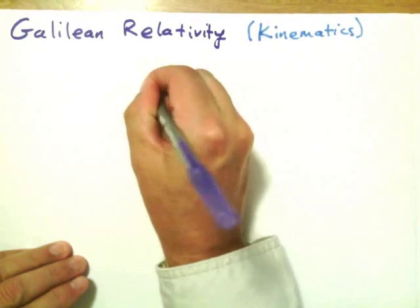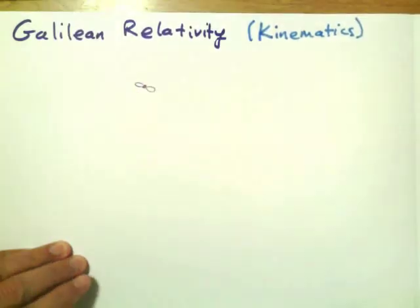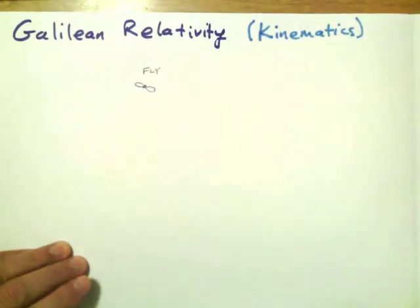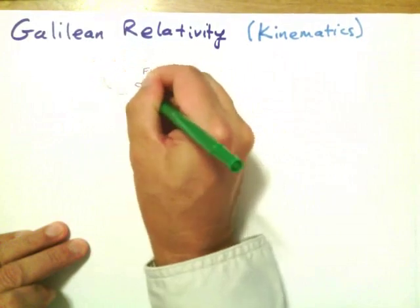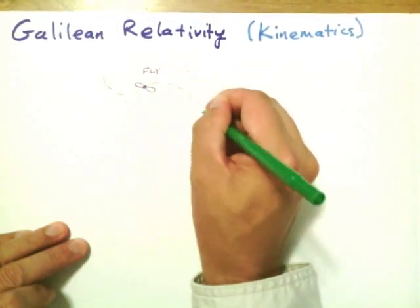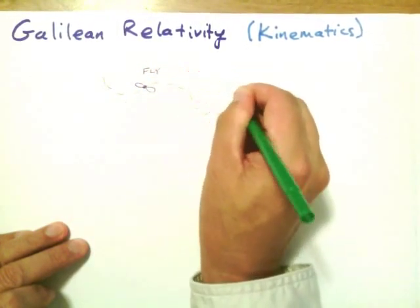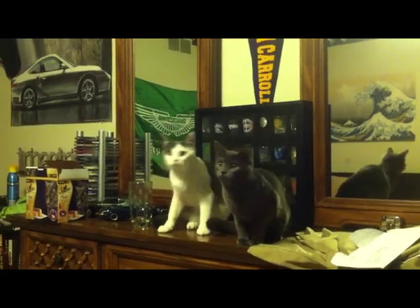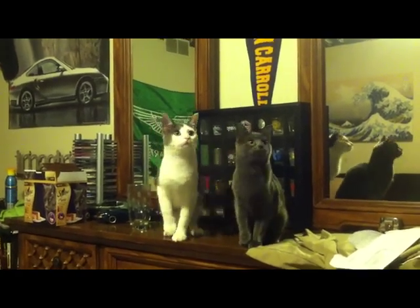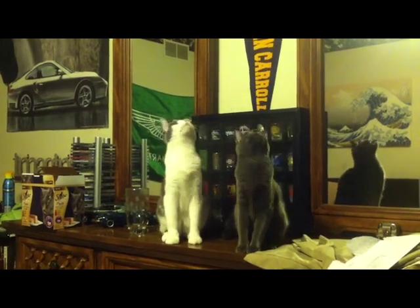Suppose we consider an object that might be moving, like a fly. A fly can have all kinds of complicated motion along a twisted path. Fly motion can be very complicated.